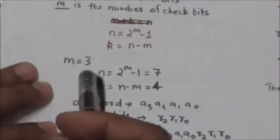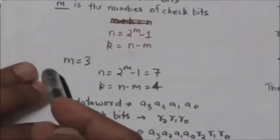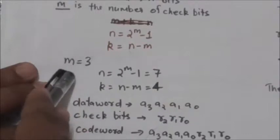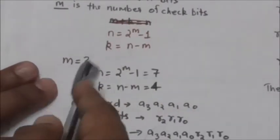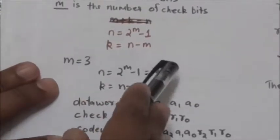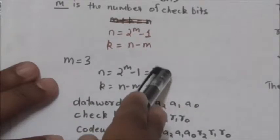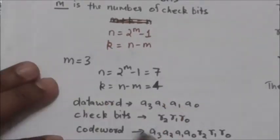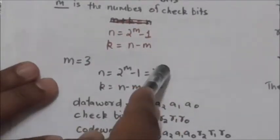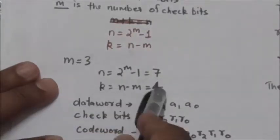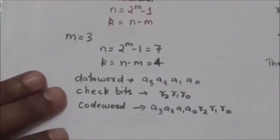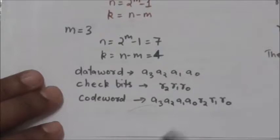Now suppose m is equal to 3. In this example of Hamming code, we will consider that the number of check bits is 3. So how many bits will be in the code word? n is equal to 2 raised to power m minus 1, so n is equal to 7. The code word will have 7 bits. And k is equal to n minus m, so with n equal to 7 and m equal to 3, k will be 4.